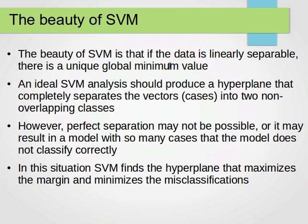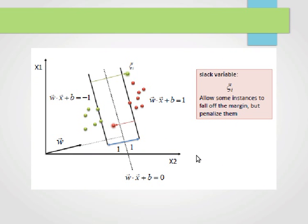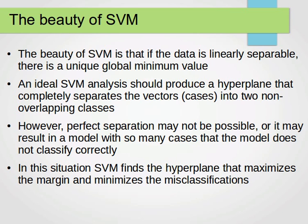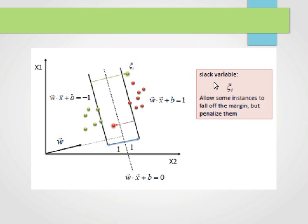However, perfect separation may not be possible, or it may result in a model with so many cases that the model does not actually classify correctly. In this situation, support vector machines find the hyperplane that maximizes the margin and minimizes the misclassification. This is done by introducing what is known as the slack variable, which allows some instances to fall off the margin but penalizes them. The idea is to find the hyperplane that maximizes the margin while minimizing misclassifications.